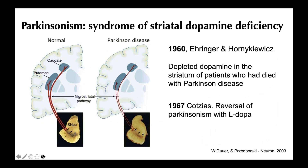It took almost a century for Ehringer, a young graduate working in Hornykiewicz's lab, to show that in patients who had died with Parkinson's disease, dopamine — recently described as a neurotransmitter by Carlsson — was severely depleted in the striatum, meaning the caudate and putamen. This opened the path for Cotzias in 1967 to reverse this clinical syndrome with a dopamine precursor called L-Dopa. The substantia nigra is where the dopamine neurons originate and innervate the striatum.